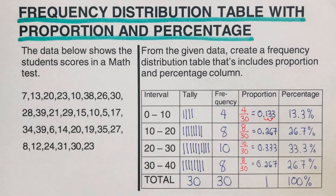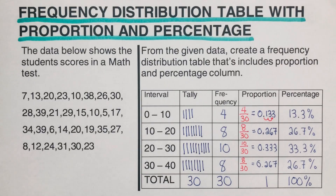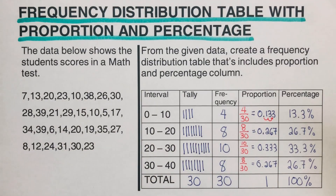This is what we call a frequency distribution table with proportion and percentage.